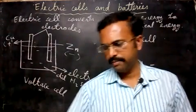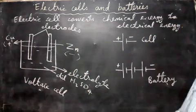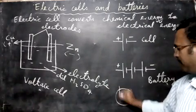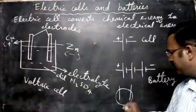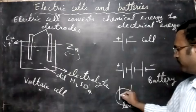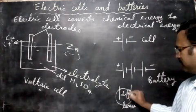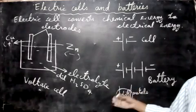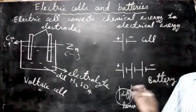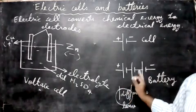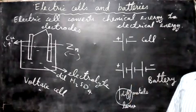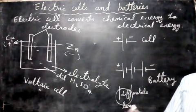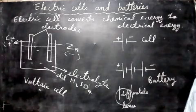Then commonly also we can make a cell using a lemon. You can take a lemon and keep any two different metals. These are the electrodes. In textbook they given us copper and zinc. We can use different metals whatever you have, they should be different, that's the only thing. LED can work for long time using this lemon cell. You can also make using other vegetables like potato also.